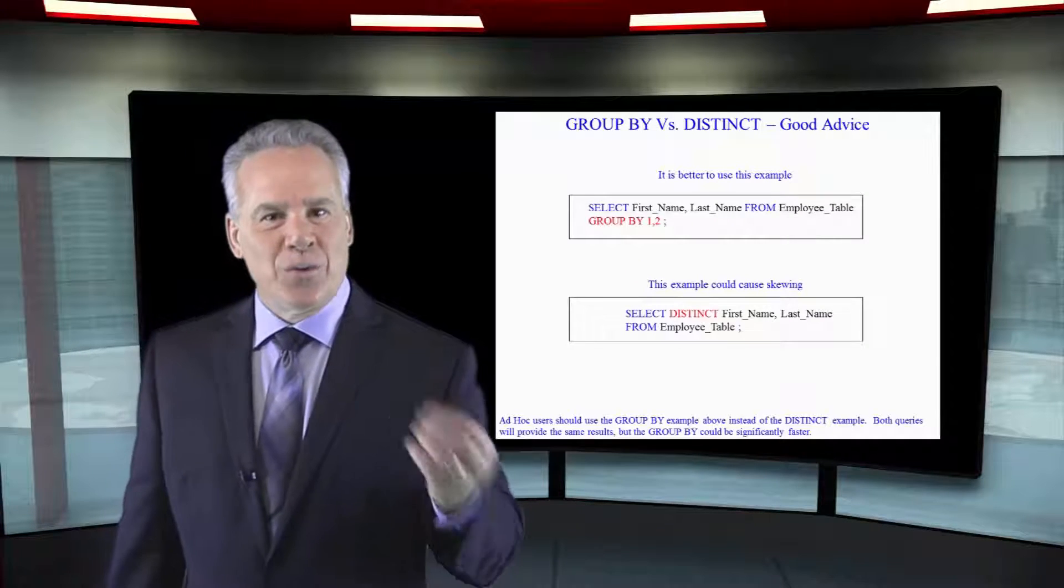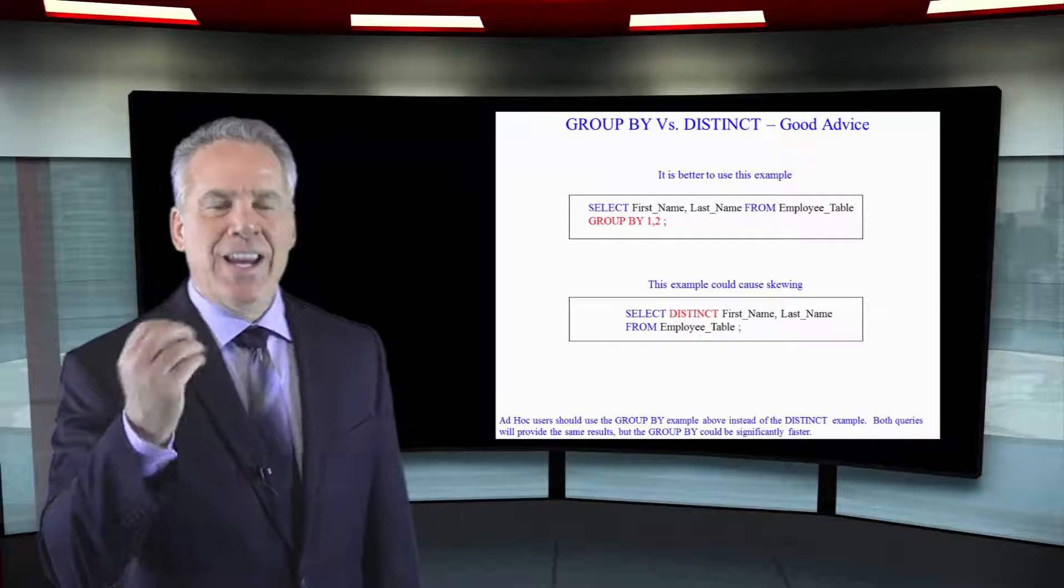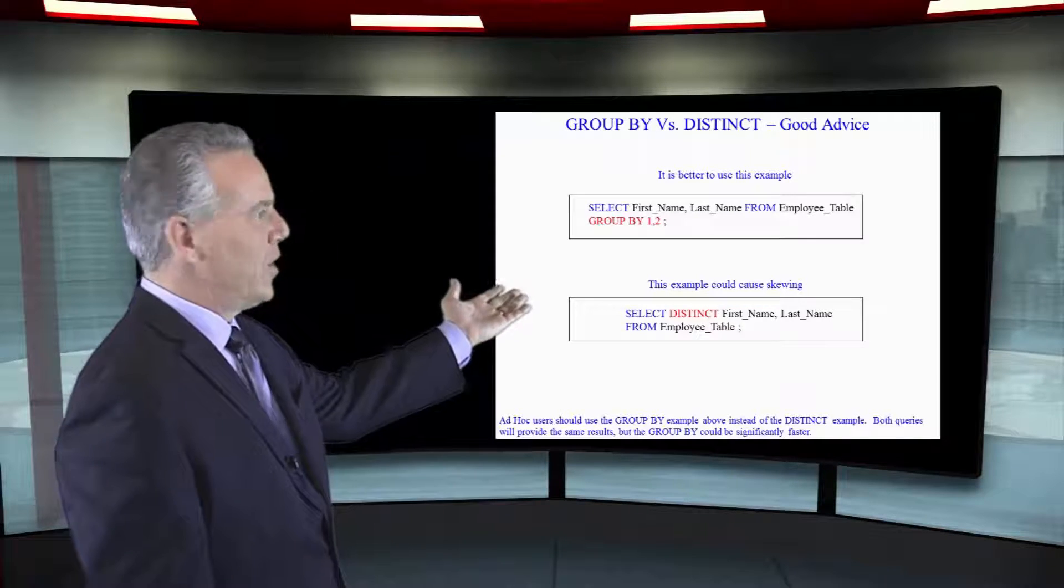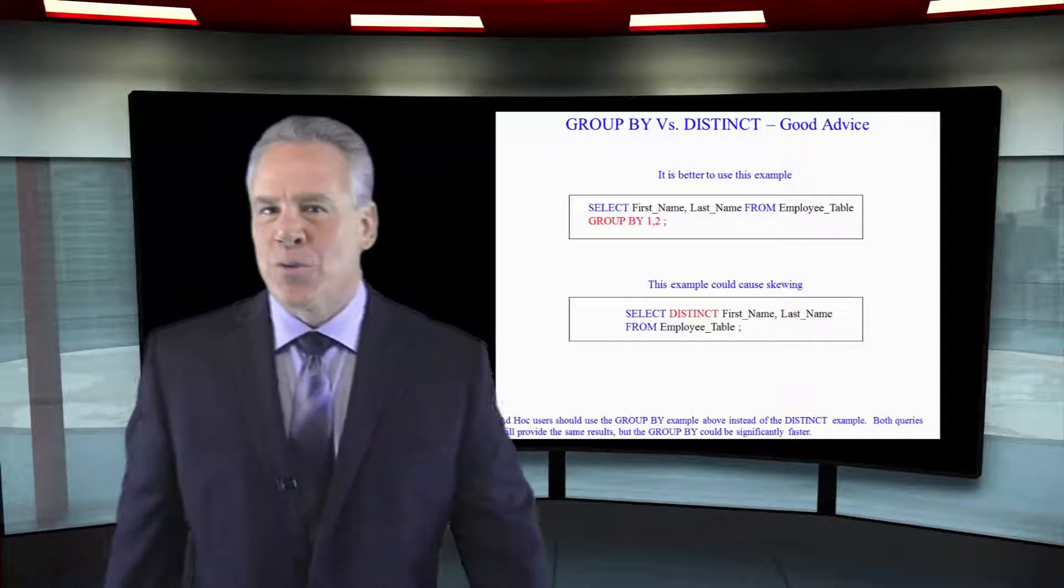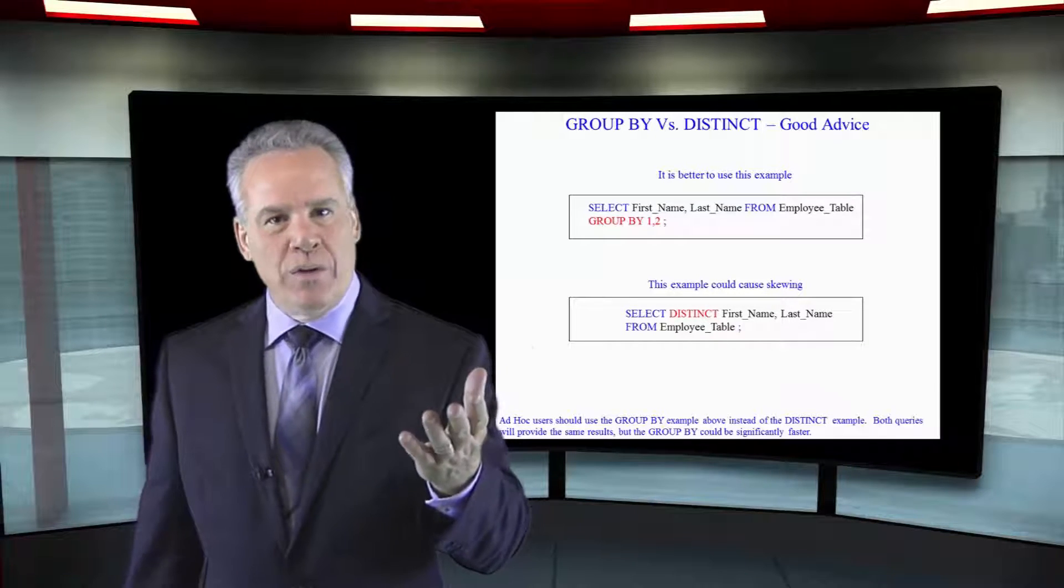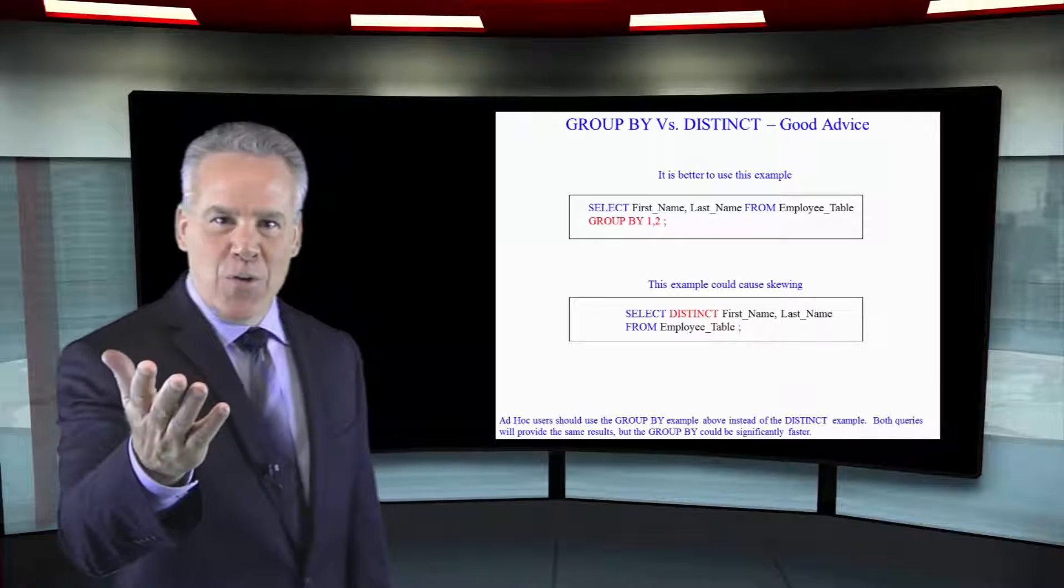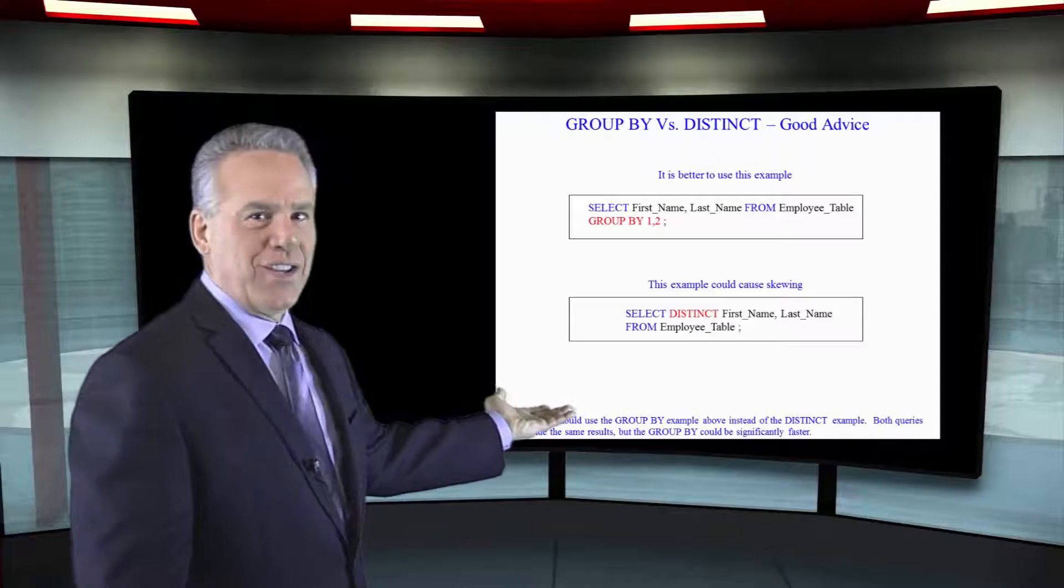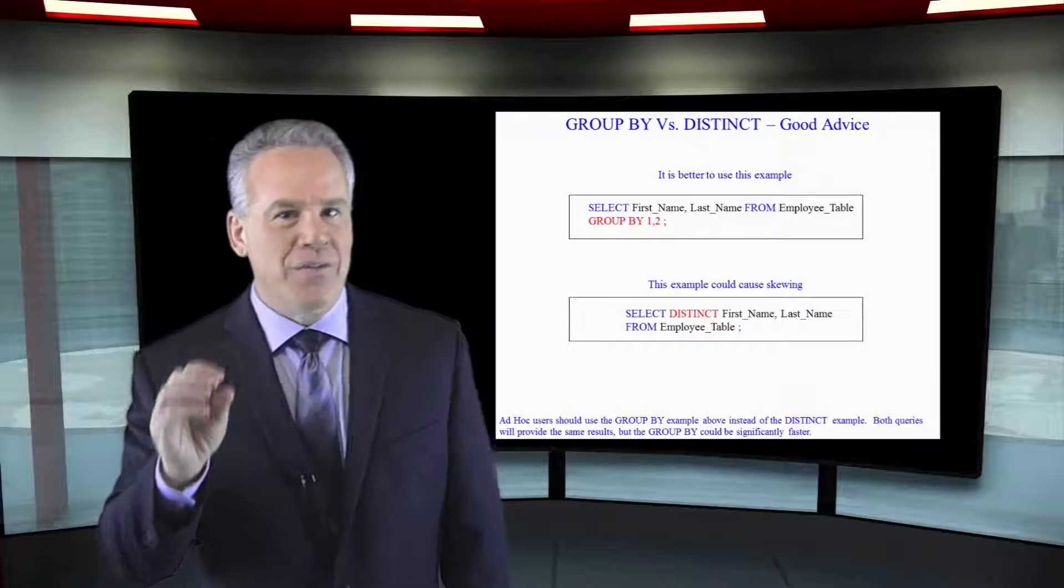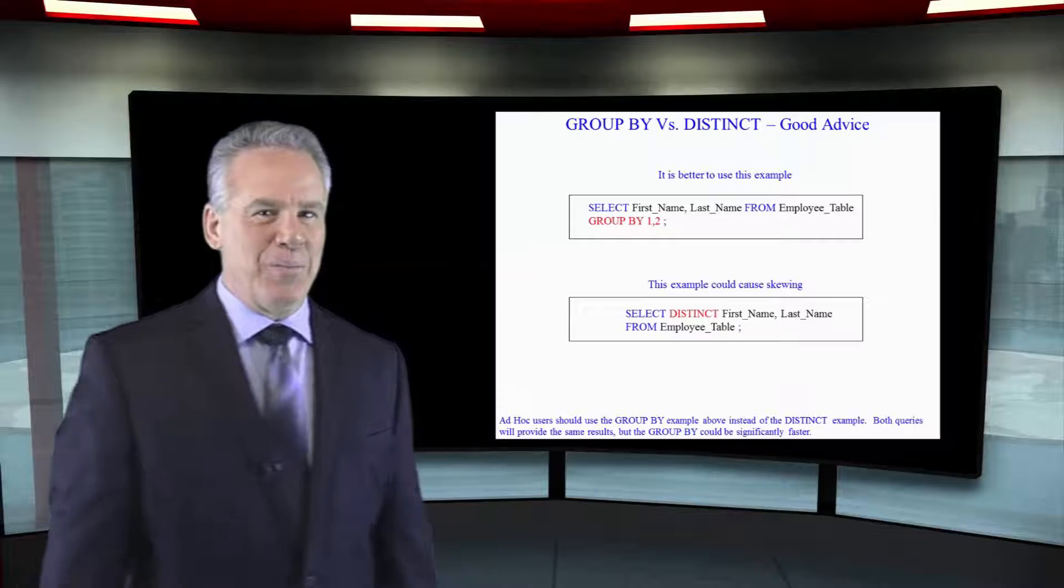Here you can see the group by and distinct commands again, but with multiple columns. We're going to start with the group by. Select first name, last name from employee table group by one comma two. This would be equivalent to saying group by first name, last name also. Below that, we see select distinct first name, last name from employee table. These are both equivalent. But again, when in doubt, I love to go with my group by commands.